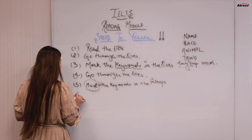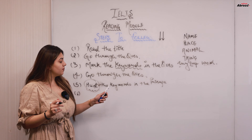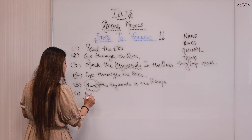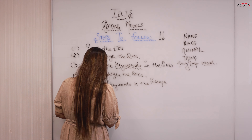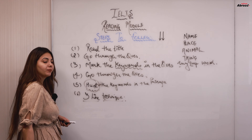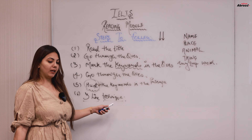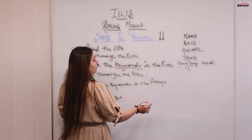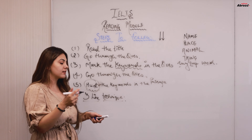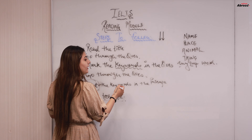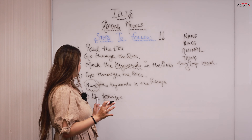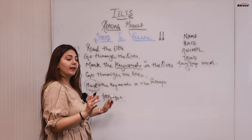Step number six: once I have found the keyword in the passage, I am required to use the three-line technique. What is the three-line technique? It means that wherever I get the keyword, I will surely find my answer within those lines. That is your three-line technique.